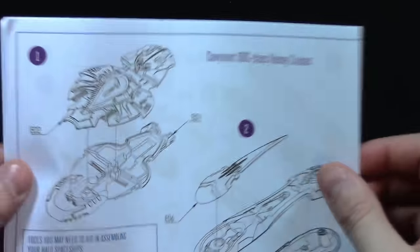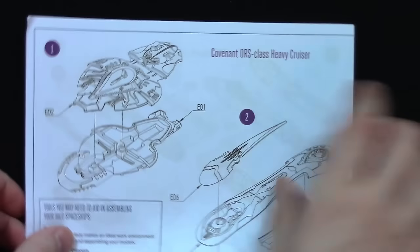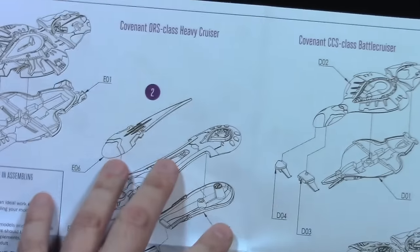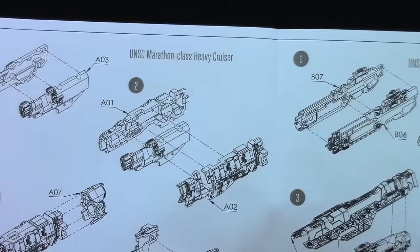You get some assembly instructions, which on one side has the Covenant and on the other side actually has UNSC. It's the same sheet for all the UNSC and Covenant core upgrade boxes.